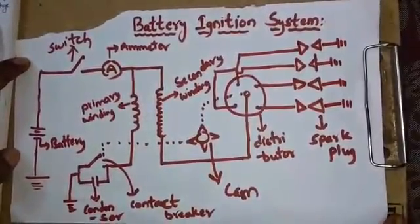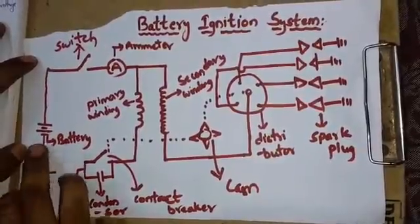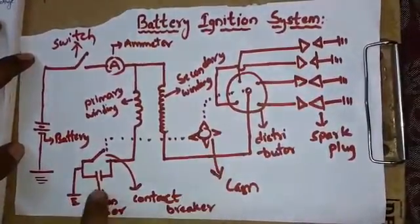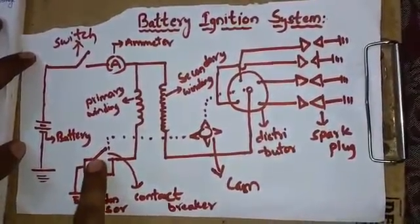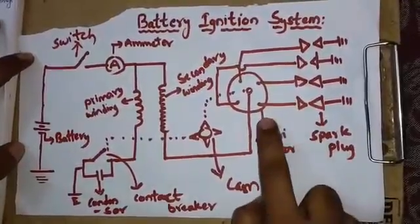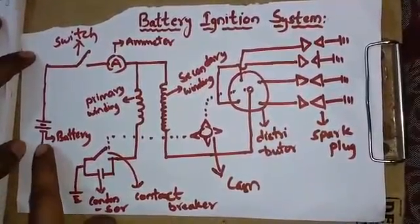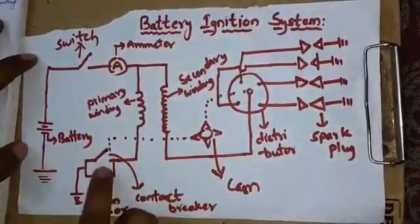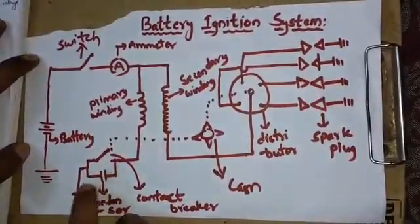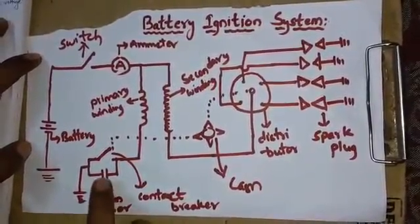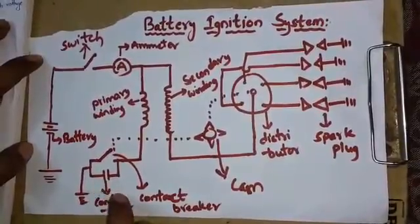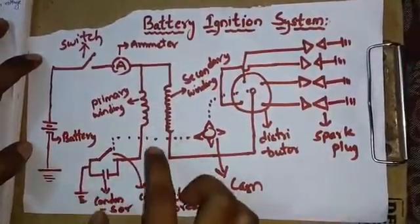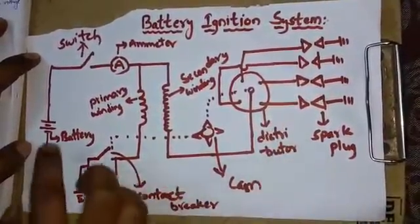In the battery ignition system, here is the battery and the ammeter, here is the primary winding and here is the secondary winding, the cam, the condenser, the contact breaker, and this is the coil and this is the distributor. The battery is connected to the switch and ammeter through the primary winding to the contact breaker to the ground. A condenser is connected in parallel to the contact breaker, and one end of the secondary winding is also connected to the coil and the other end to the distributor.